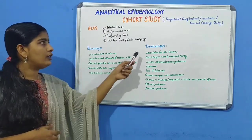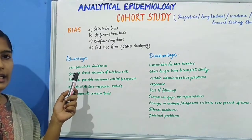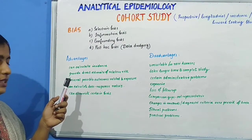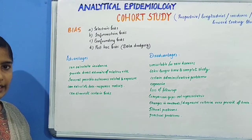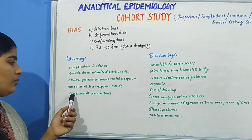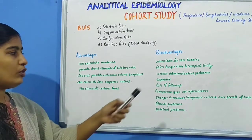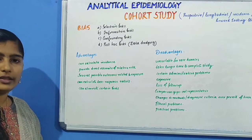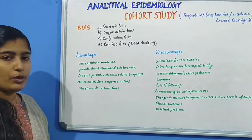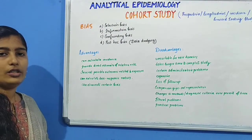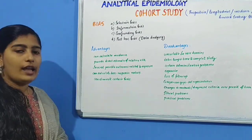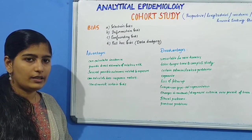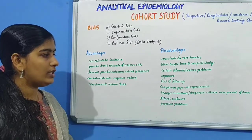Finally, the advantages and disadvantages of cohort study. Advantages: it can calculate incidence and provide direct estimates of relative risk; several possible outcomes related to exposure can be studied simultaneously; it can calculate dose-response ratios; and it can eliminate certain types of bias. Disadvantages: it is unsuitable for rare or uncommon diseases; it takes longer time — for example, studying cancer may take 10 to 30 years; it has administrative problems such as loss of experienced staff and funding; it is very expensive; there can be inevitable loss of follow-up; and the comparison groups may not be representative of all individuals of interest.